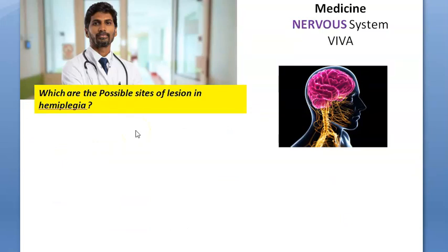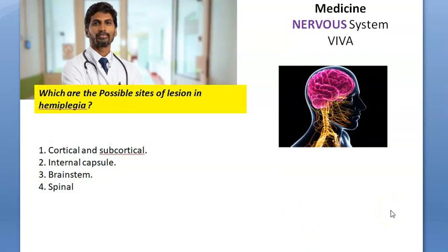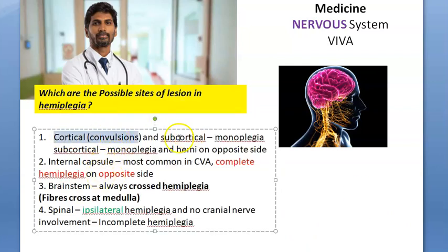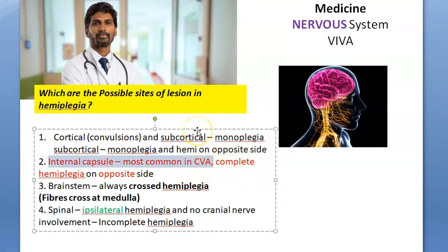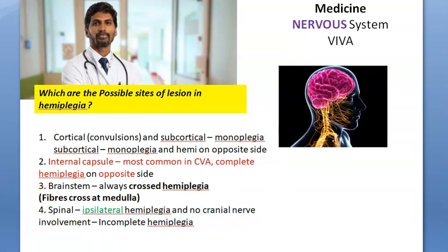What are the possible sites of lesion in hemiplegia? The sites can be the cortex, subcortex, internal capsule, brainstem, or spinal cord. Cortical involvement can cause convulsions and monoplegia. Internal capsule is the most commonly affected site in cerebrovascular accident, causing complete hemiplegia on the opposite side. Brainstem causes crossed hemiplegia — the face on the opposite side is affected. Spinal lesion causes ipsilateral hemiplegia with no cranial nerve involvement.